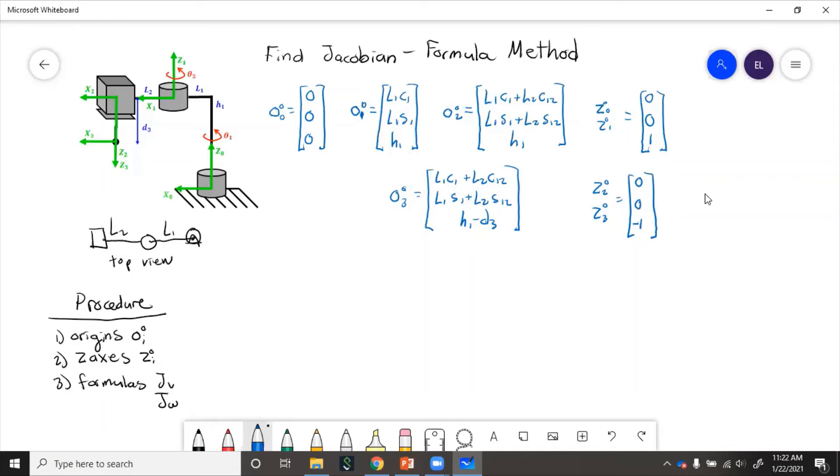So now that we've got the origins in the z-axis vectors, let's plug in the formulas for jv and j omega. So we know j equals jv and we need the formulas for each one. So for the first two joints, those are revolute. So we'll have z0 cross with o3 minus o0, and then z0 for joint one.